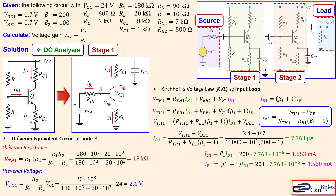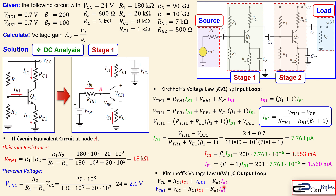To confirm operation in the linear region, we check VCE1 using KVL at the output loop: VCC equals the voltage across RC1, plus VCE1, plus the voltage across RE1. Substituting the collector and emitter currents and resistor values, we get VCE1 approximately 10 volts — well above the 0.2 volt saturation limit. So the transistor is confirmed in the linear region and our assumption is correct.